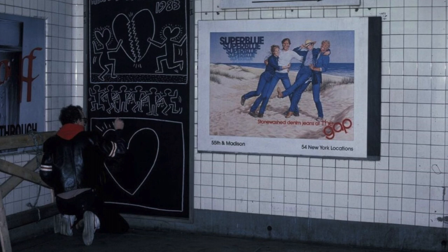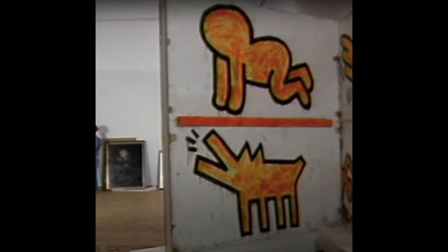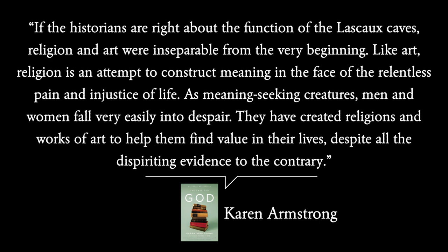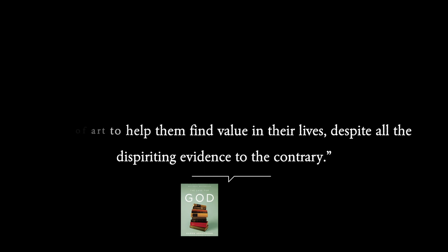We can still analyze his forms. His babies crawling in a line above the dogs on that construction fence evoke the human-animal connection in the same way that the paintings in Lascaux did. In those prehistoric communities, some historians believe humans were trying to reconcile their need to live with the death of the animals they hunted — the rituals helped them process difficult emotions. Similarly, Keith Haring was helping New York process a difficult time. His work reminds me of a passage in Karen Armstrong's book The Case for God, where she states that religion and art were inseparable from the very beginning — like art, religion is an attempt to construct meaning in the face of the relentless pain and injustice of life. As meaning-seeking creatures, men and women fall easily into despair, and they have created religions and works of art to help them find value in their lives, despite all the dispiriting evidence to the contrary.